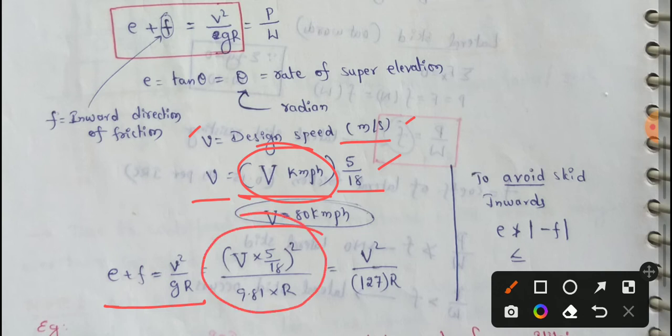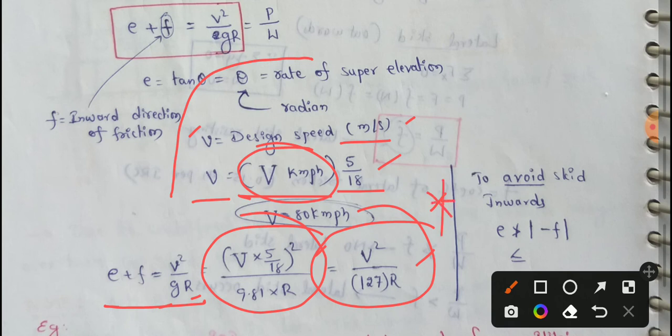E plus F is equal to Vr. Here we substitute E value. V square means V into 5 by 18 whole square by G value. This is the value of 9.81 into radius of circle. This is the circle, this is the radius. If we do this calculation, the final is V square by 127 into r.